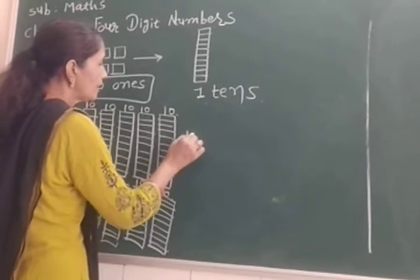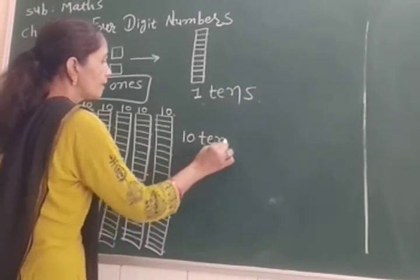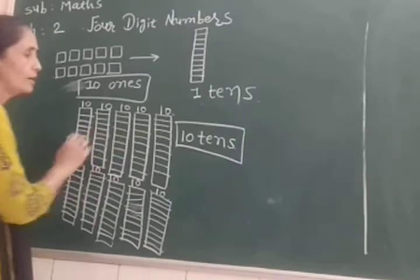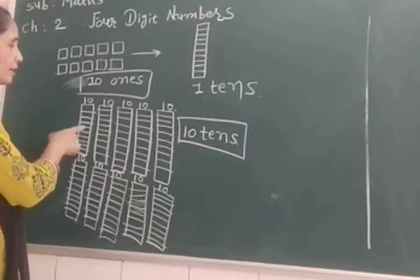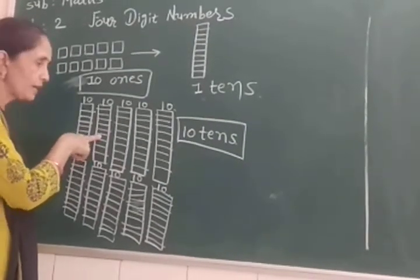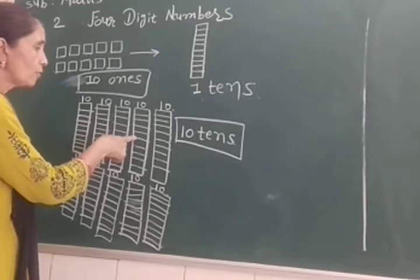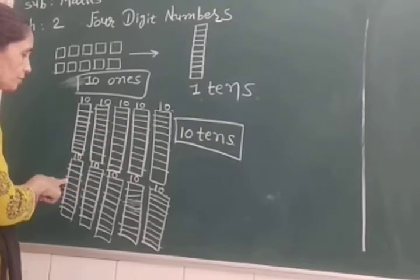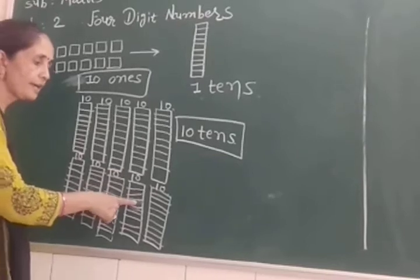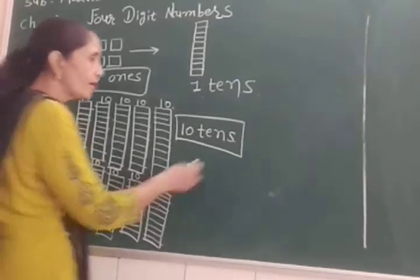So these are ten tens. Ten, ten, ten - counting ten, twenty, thirty, forty, fifty, sixty, seventy, eighty, ninety, and what do we get? Hundred.